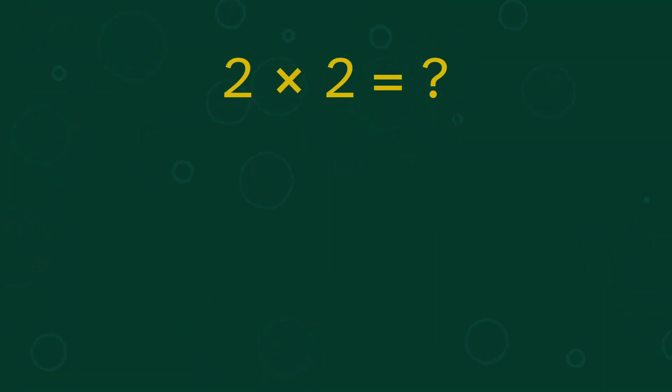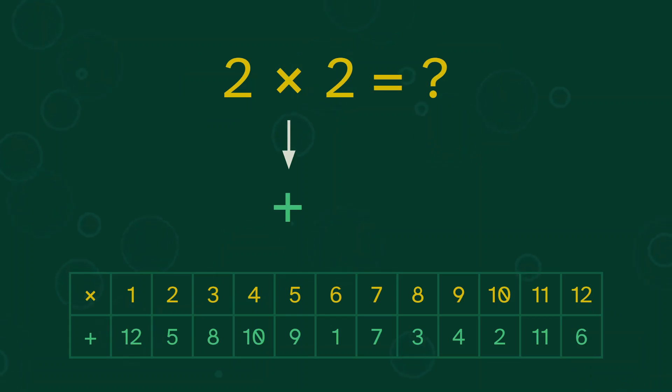What is 2 times 2? I forgot, and I'm too tired to do multiplication right now. Luckily, I don't have to. We can map this multiplication problem into an addition problem using this table. So 2 goes to 5, and now we have 5 plus 5, which I know, that's 10.